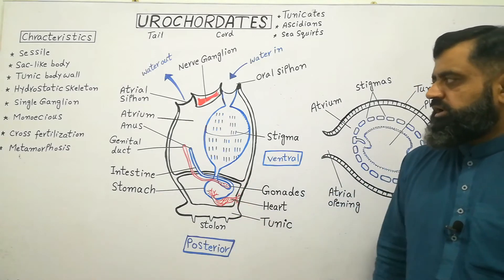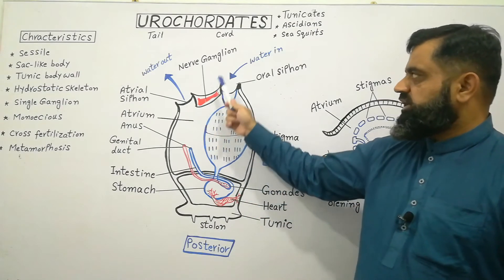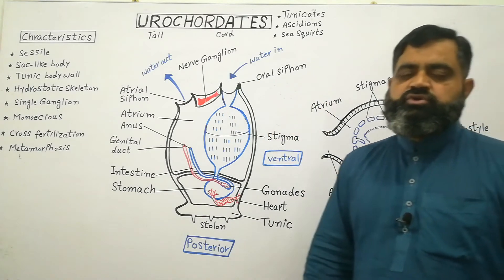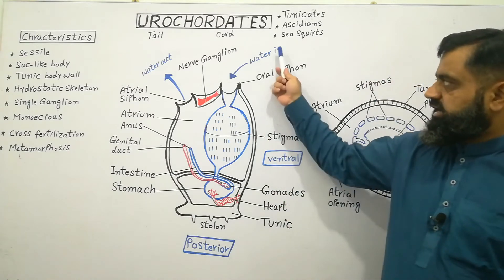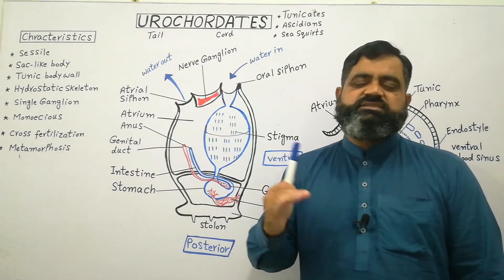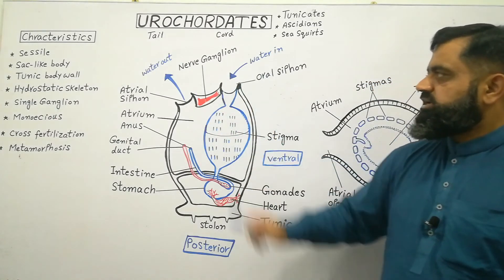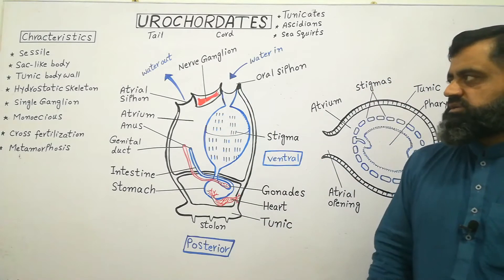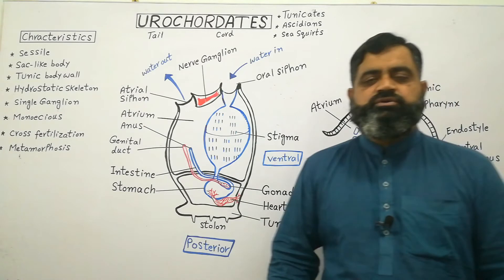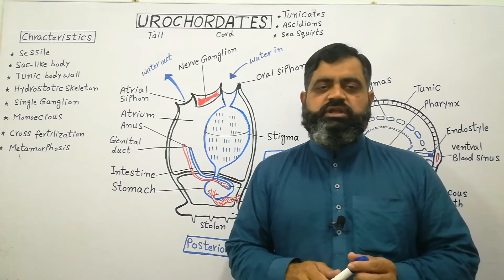The most important feature of these animals is that they have two openings on the anterior side of the body, known as siphons. The first is the oral siphon, also known as the incurrent siphon, through which water enters the body. The second is the atrial siphon, also known as the excurrent siphon, through which water leaves the body. These two openings are specialized characteristics found only in these animals. They also have a hydrostatic skeleton because most of the body is filled with water moving in and out.